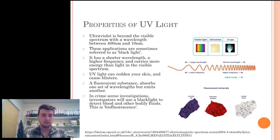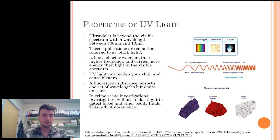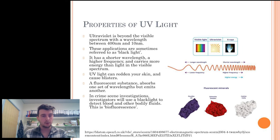Ultraviolet is beyond the visible spectrum with a wavelength between 400 nm and 10 nm. These applications are sometimes referred to as black light. UV light has a shorter wavelength, a higher frequency and carries more energy than light in the visible spectrum. UV light can redden your skin and cause blisters. A fluorescent substance absorbs one set of wavelengths but emits another. In crime scene investigations, investigators use a black light to detect blood and other bodily fluids — this is called biofluorescence.